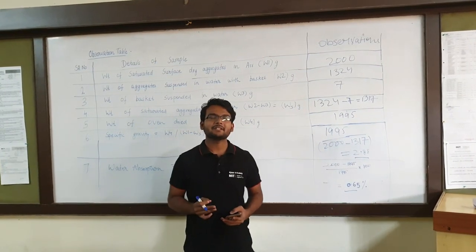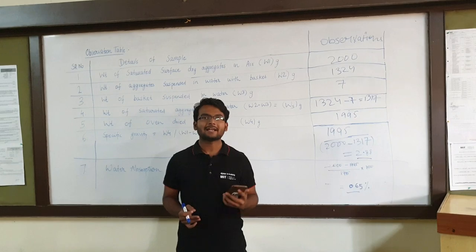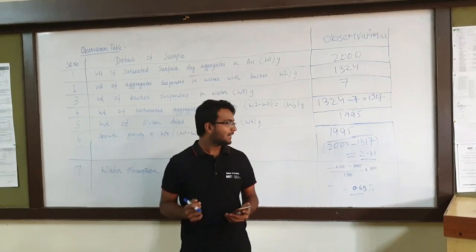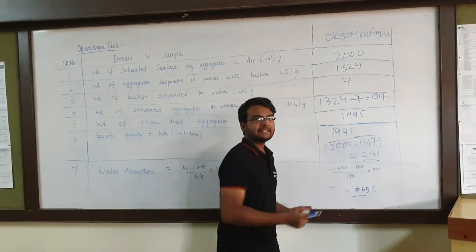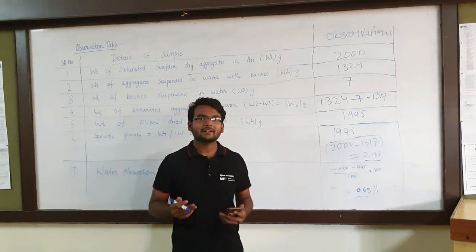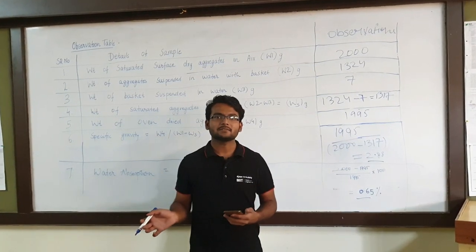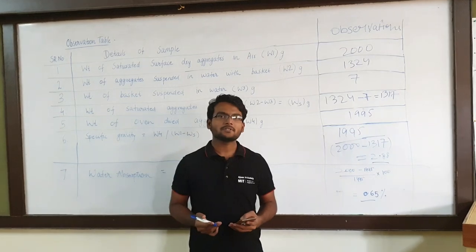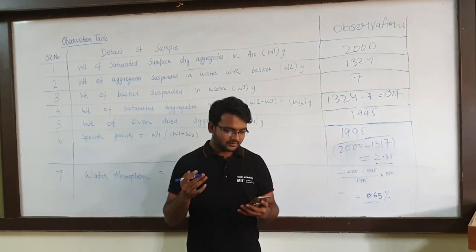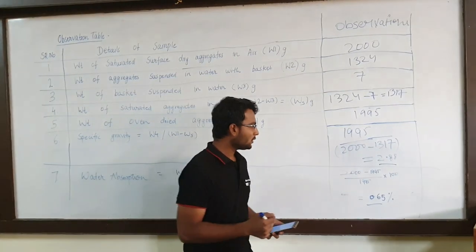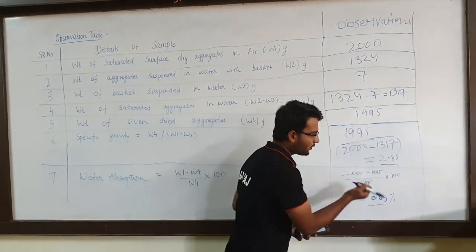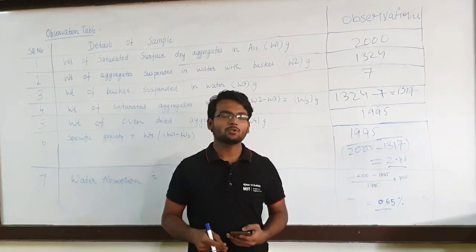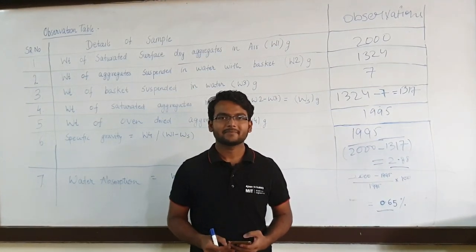As we all know, the specific gravity of aggregates for road construction lies between 2.5 and 2.9, and our result is 2.88. Hence, we can use the aggregates for road construction. The water absorption range lies between 0.1 to 2%, and our result is 0.65%, so we can also use the aggregates for road construction. Thank you.